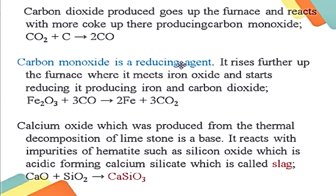Carbon monoxide is the reducing agent — it removes the oxygen from the ore, iron hematite. Carbon monoxide rises up the furnace, reduces iron oxide, producing iron and carbon dioxide: Fe2O3 + 3CO → Fe + CO2. The real reducing agent is carbon monoxide.